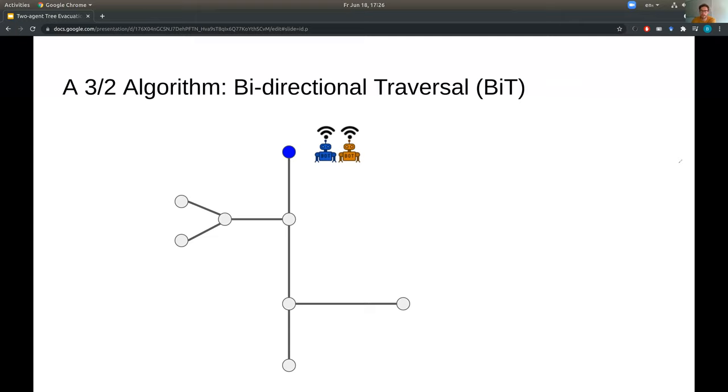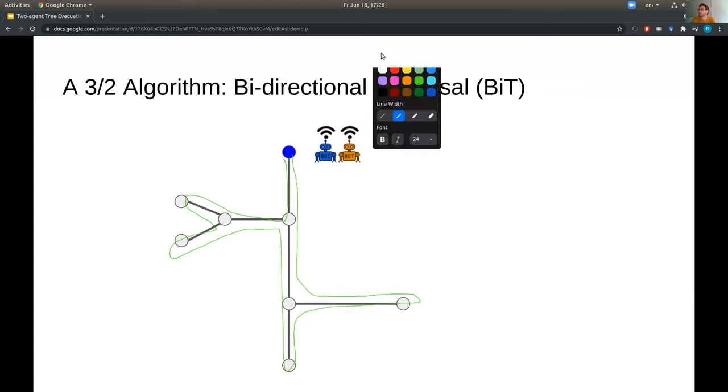So first, let's look at algorithms for the global communication setting. So we start with an algorithm called bi-directional traversal. So this algorithm is almost self-explanatory. So from the name, we take some traversal of the tree, for example, like this, and then the two robots simply go along this traversal in opposite directions. So the blue robot maybe like so, and then the orange robot in the other direction. And then they will meet somewhere in the middle of this traversal, let's say here, at time W.